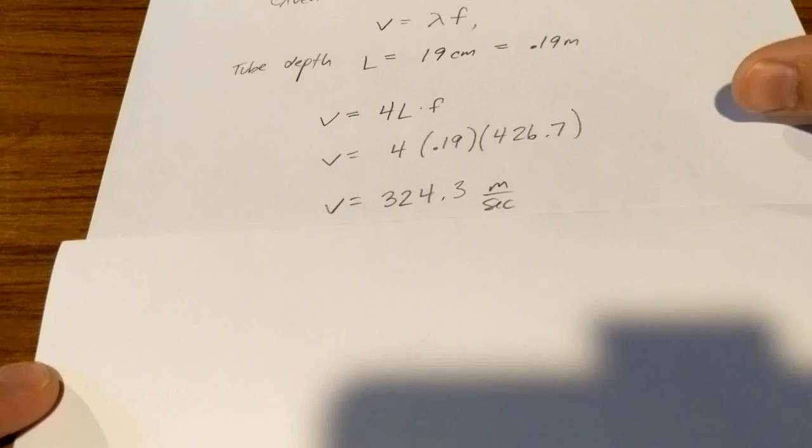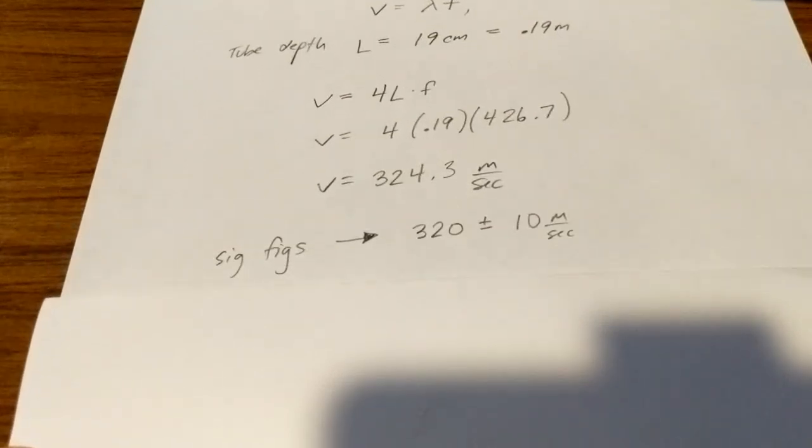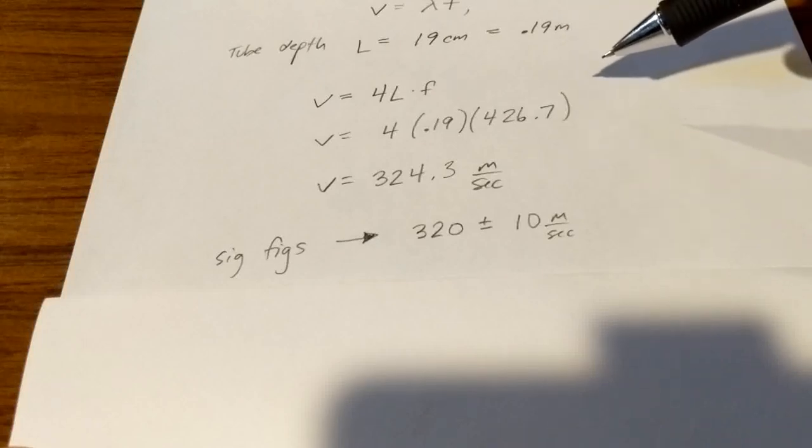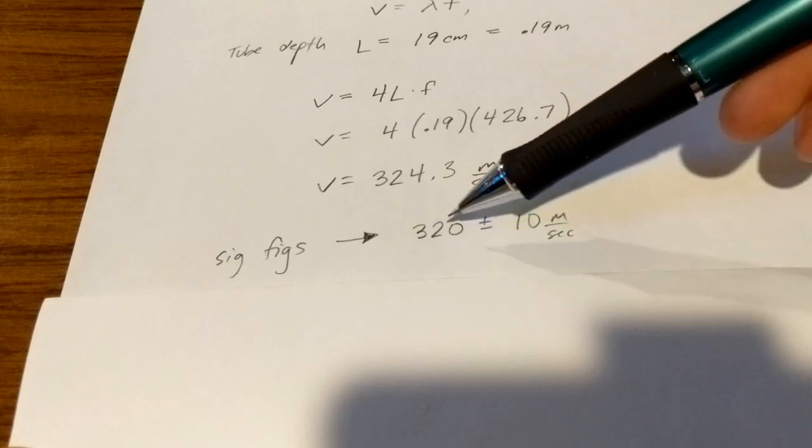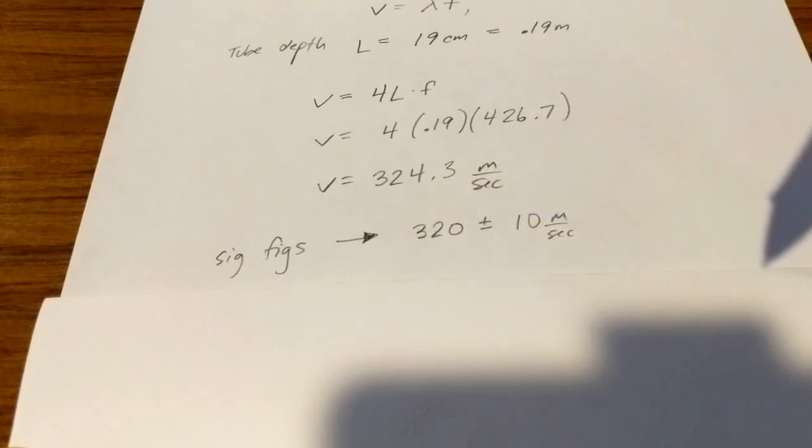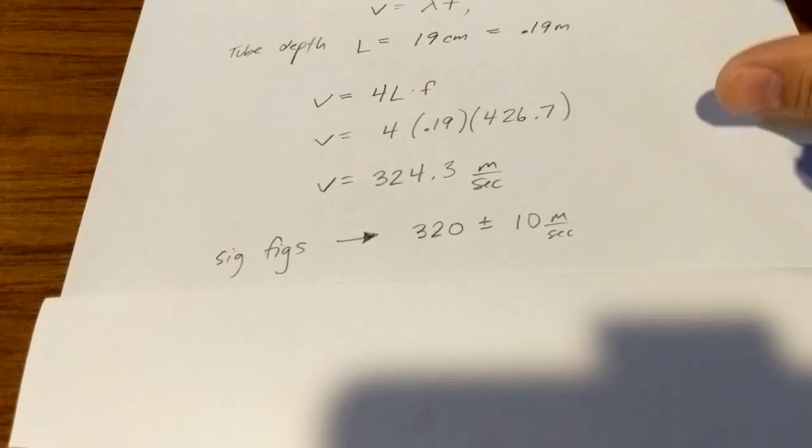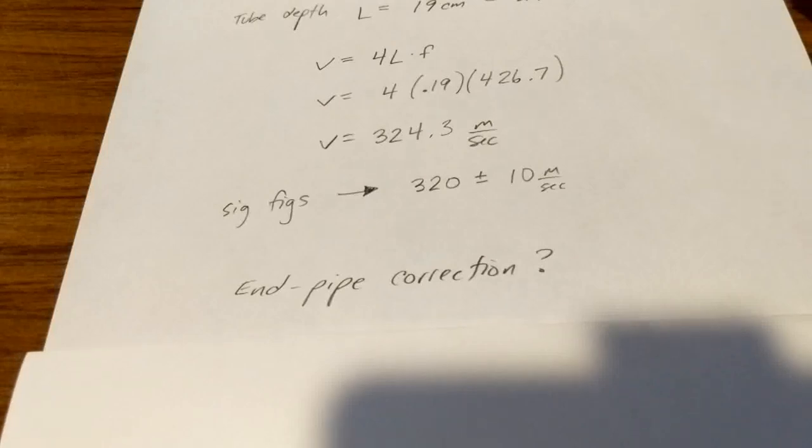If we make proper consideration of our sig figs, though, we would have to admit that this is not better than a two significant figure experiment, and so really we're saying that the speed of sound is somewhere close to 320, but maybe plus or minus 10 meters per second. So, it could be as high as 330 meters per second. Also, and this would make for an excellent topic for an internal assessment, there is something called end-pipe correction, where the proper length of an open or closed tube is not exactly equal to the length that the tube behaves as if it is. Meaning, just because we measured the depth to be 19 centimeters does not mean that this closed tube is behaving as if it is 19 centimeters deep.